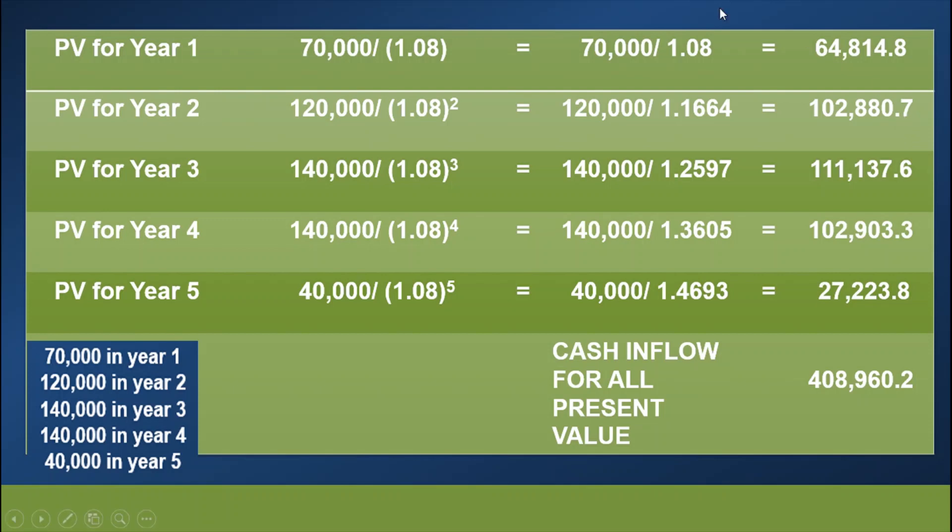We go to year 3, 140,000. So 140,000 divided by 1.08 raised to the power of 3. We will simplify these terms below. 1.08 raised to the power of 3 will give us 1.2597. And after that, we divide 140,000 by 1.2597. It will give us 111,137.6.